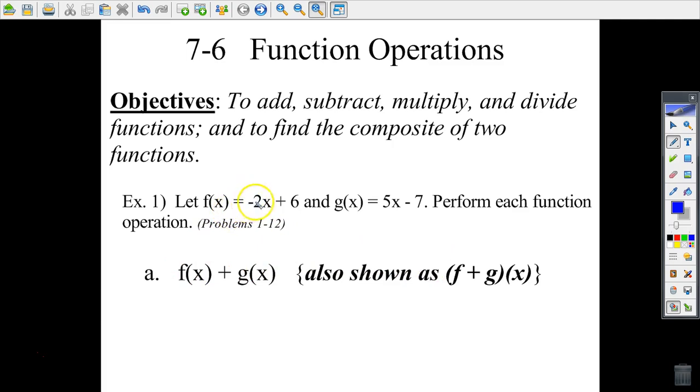We'll take the f function, which is negative 2x plus 6, and add to it the g function, which is 5x minus 7. This is really just an exercise in combining like terms. Negative 2x plus 5x is 3x, and 6 minus 7 is negative 1. So the sum of those two functions is 3x minus 1.